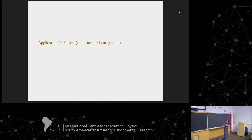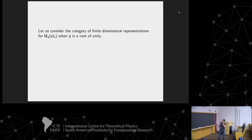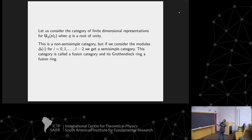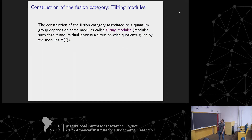People interested in fusion categories associated to this quantum group consider only the first set of irreducible representations, since the others are projective and cause complications. The first application is related to quantum groups at roots of unity: the goal is to construct the fusion category associated to the quantum group without using tilting modules.